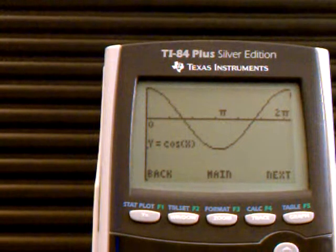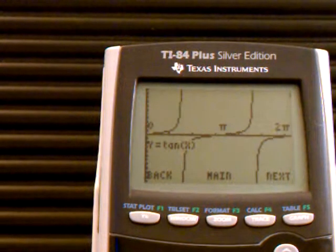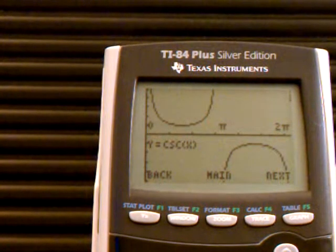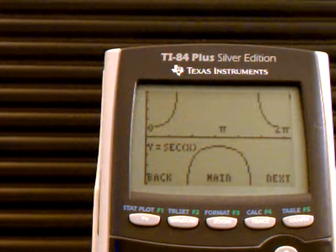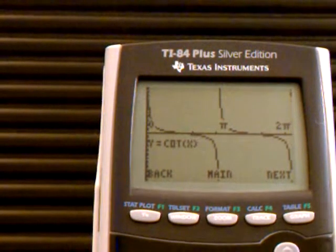You can go through and see each graph. First one is sine, this is cosine, this is tangent, this is cosecant, this is secant, and this is cotangent. All of them are in terms of pi.